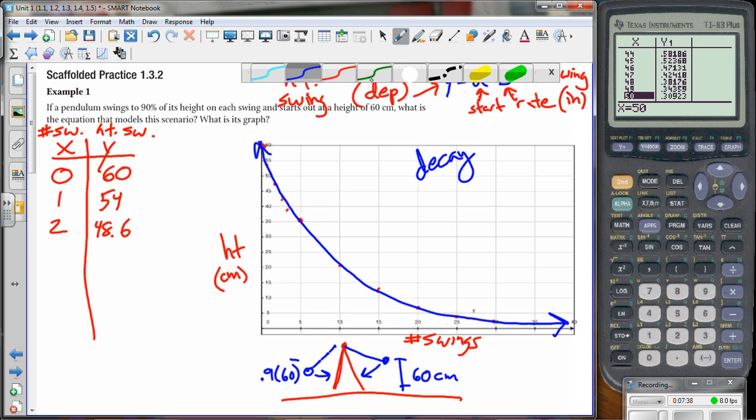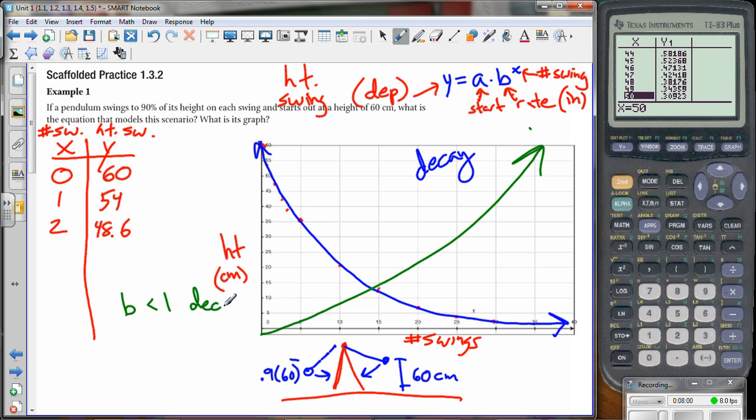Now I'm just going to sketch in here. If we had the opposite where the B value is bigger than 1, then we'd have exponential growth. And it would look like this. Because it still curves, but as the numbers get bigger, then the line gets bigger. So if we have the B value, if it is less than 1, we have decay. If the B value is greater than 1, then we have growth. I think that's a very big thing to keep in mind.